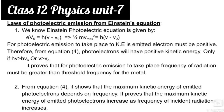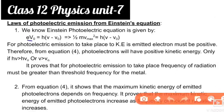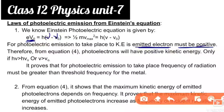We need to explain the laws of photoelectric emission using Einstein's equation. There are 4 laws. We know Einstein's photoelectric equation: eV₀ = h(μ − μ₀), where eV₀ = ½mv². For photoelectric emission to take place, the kinetic energy of the emitted electron must be positive.